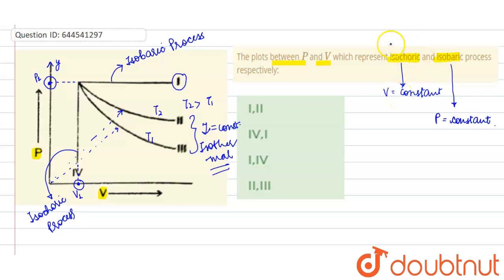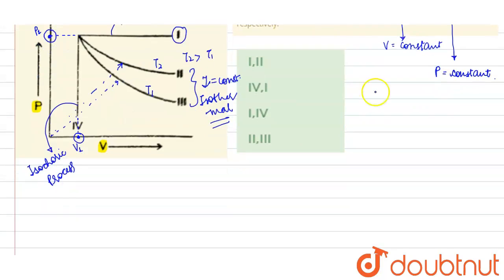curves are representing isothermal process, in which the second curve has the higher value of temperature than the third curve. So here your answer will be curves III and I - second option will be your correct answer.